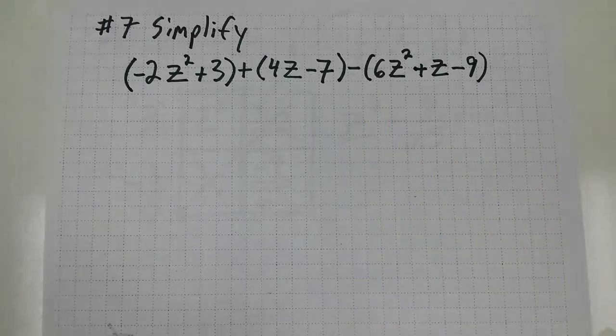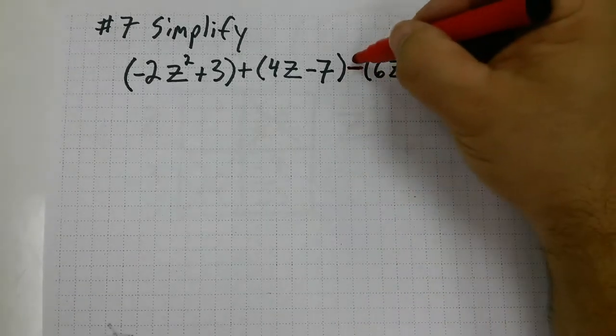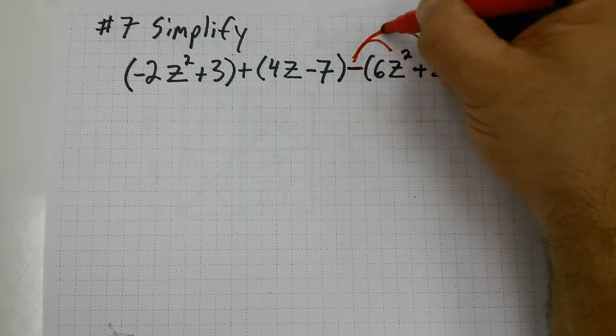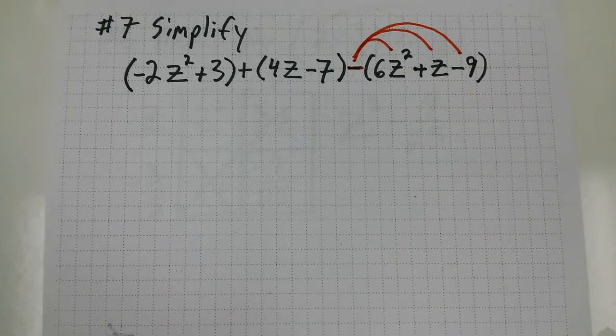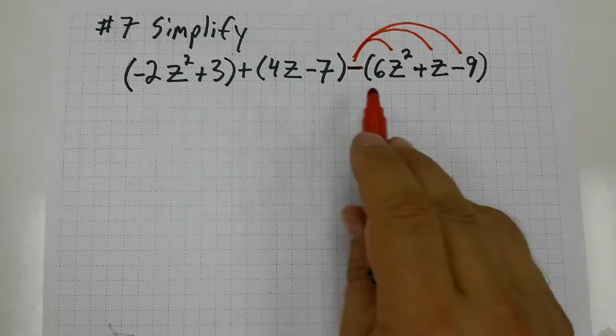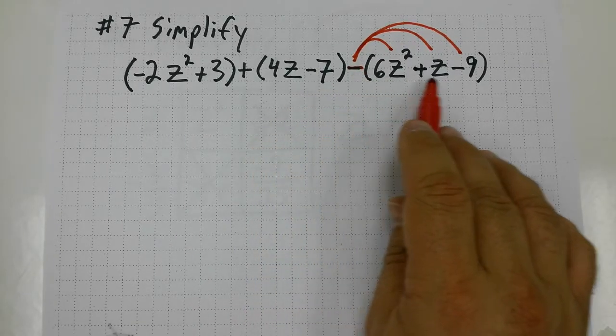But there's that negative symbol, that minus sign. When you have a minus in front of the parentheses, that's a big mistake that a lot of people make—they forget to distribute that negative across the quantity. So I'm going to ignore the parentheses for the first two quantities and then distribute the negative across the final quantity.